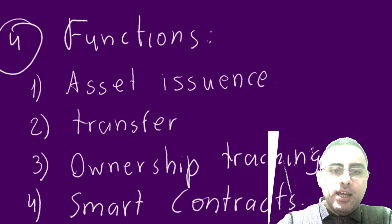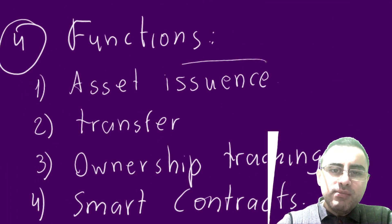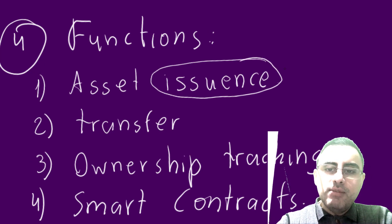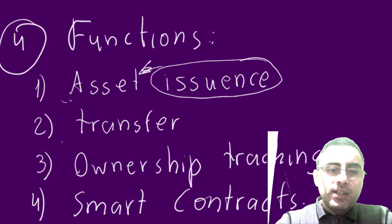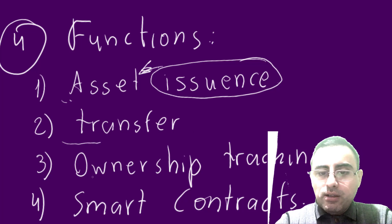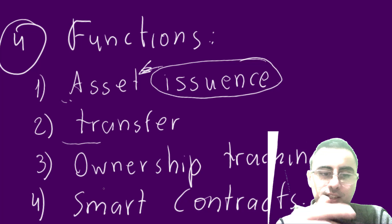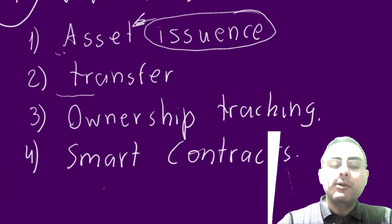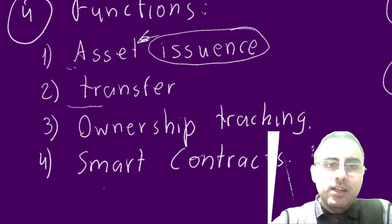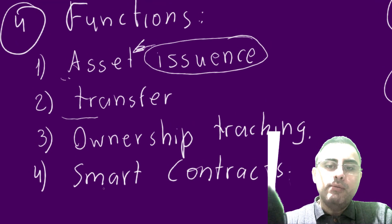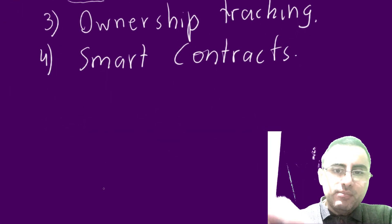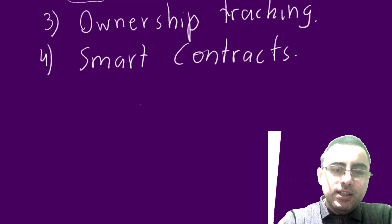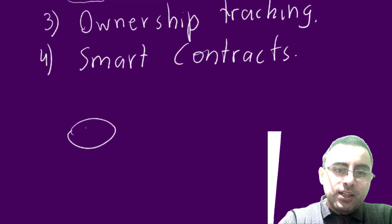The main functions include asset issuance — which means creation — you can create any asset. You can also transfer assets, hold ownership, do tracking, and make smart contracts. Let me explain what smart contracts mean in a very simple way.